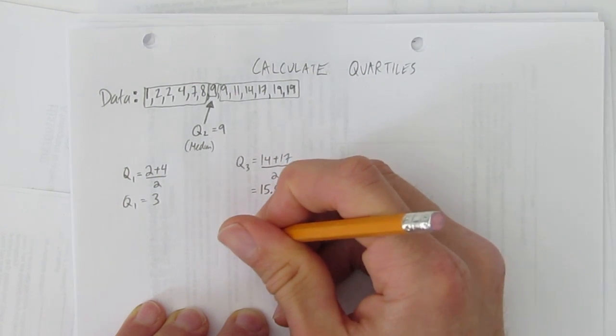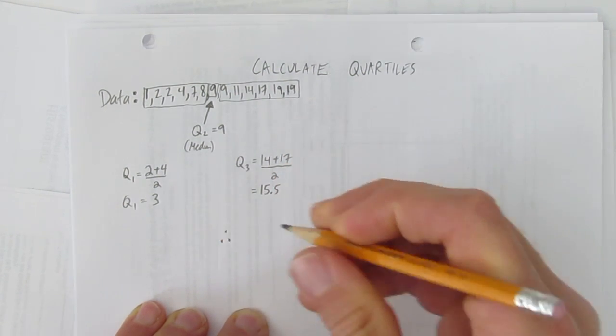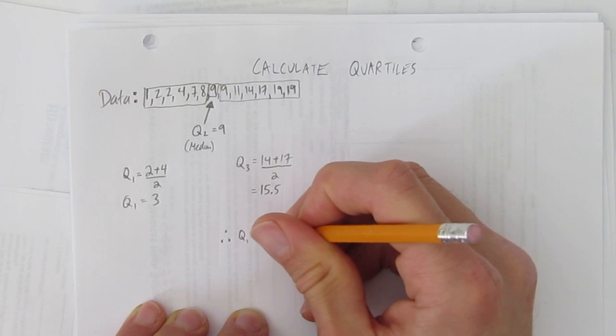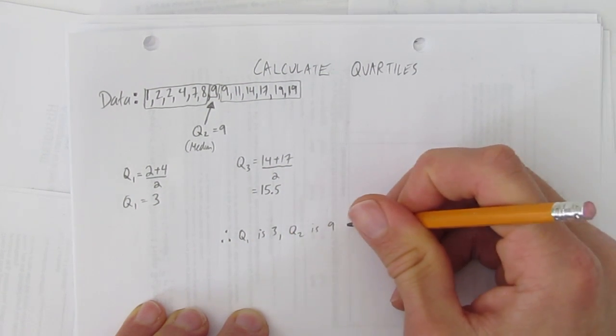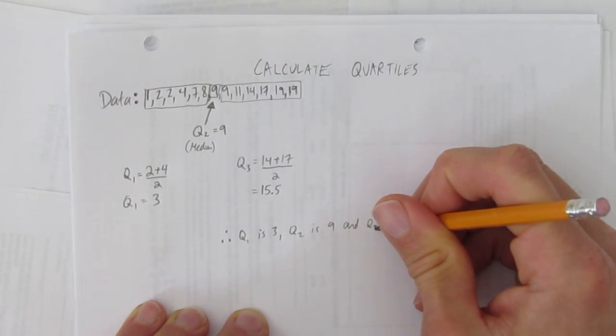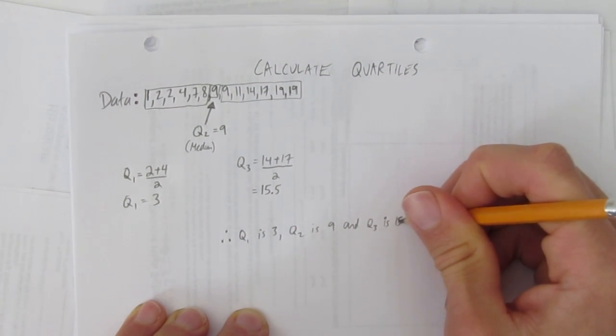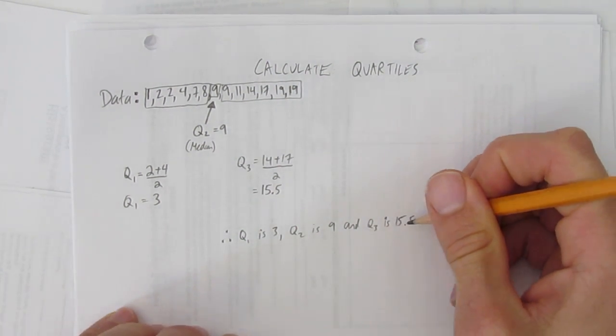And so now we know all the 3 quartile boundaries. Q1 is 3, Q2 is 9, and Q3 is 15.5. And that's how you calculate quartiles.